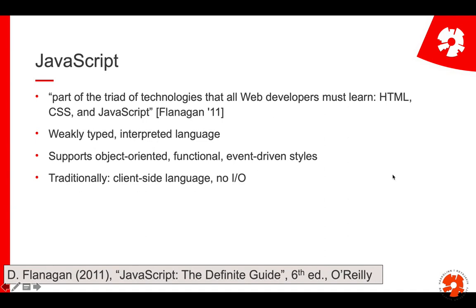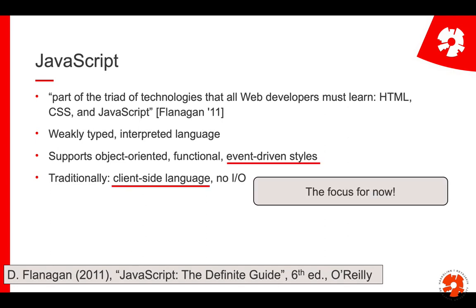Traditionally, JavaScript is a client-side language. There is no input/output — you can't really save files or delete things from the file system. In this part of the course, where we look at the front-end and stuff that runs in the browser, we specifically focus on two things: JavaScript as a client-side language, and in particular the event-driven style, where you put events into JavaScript and things happen.